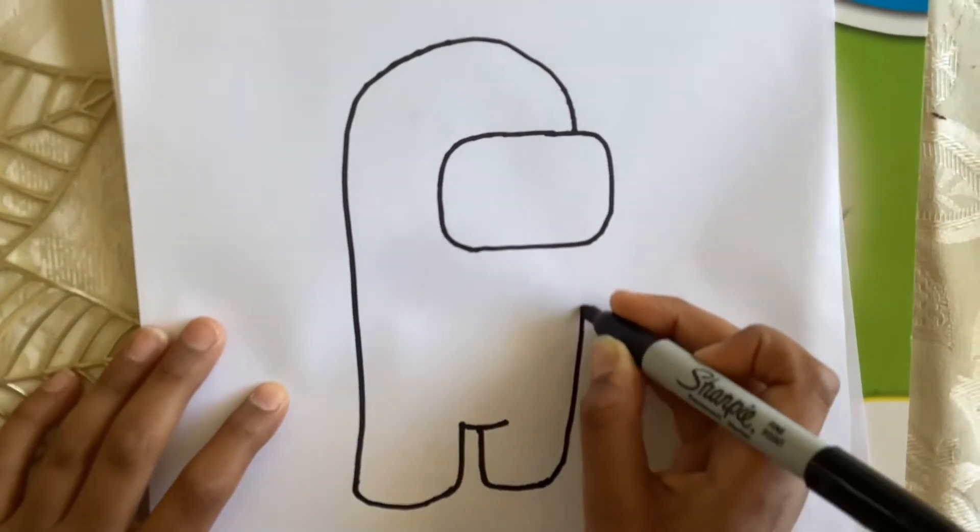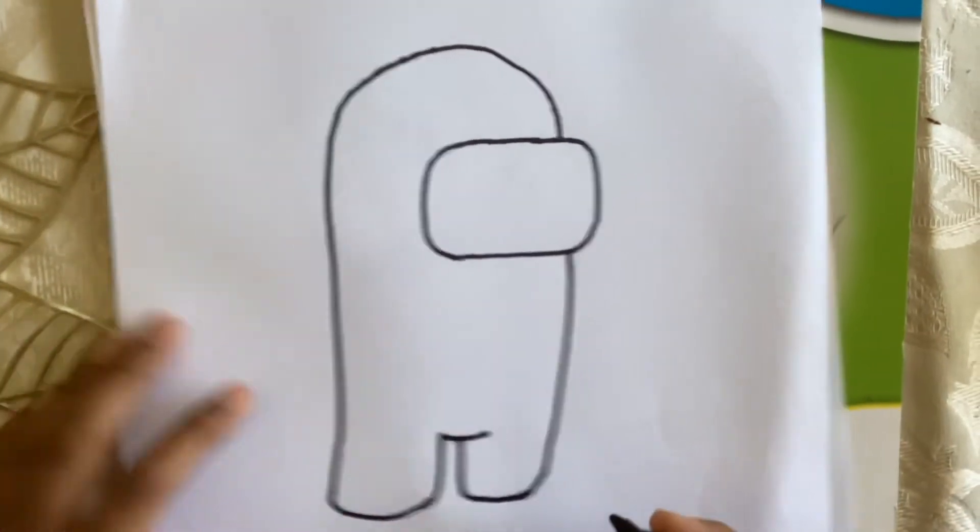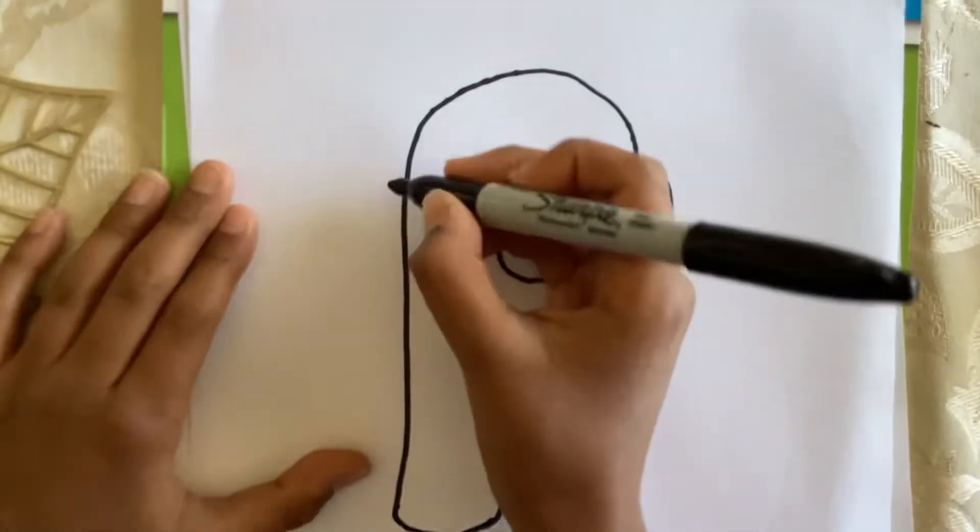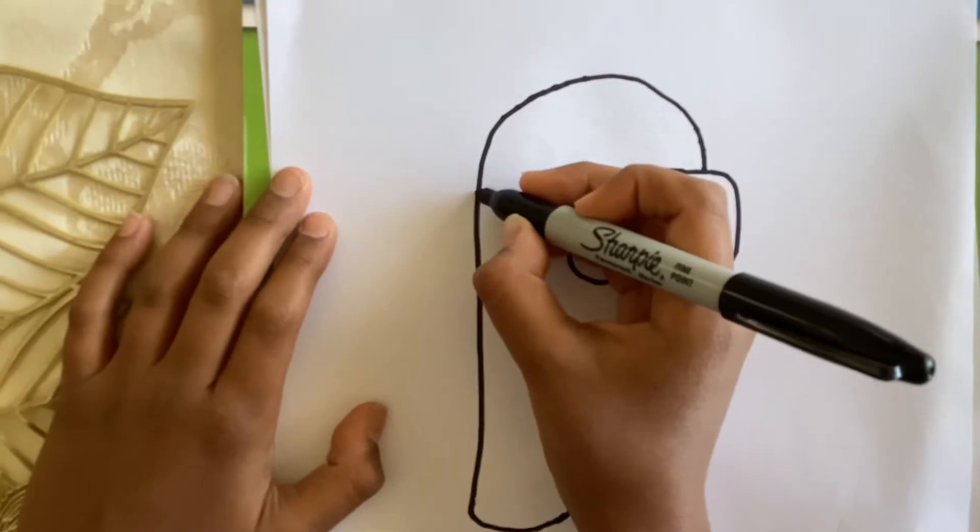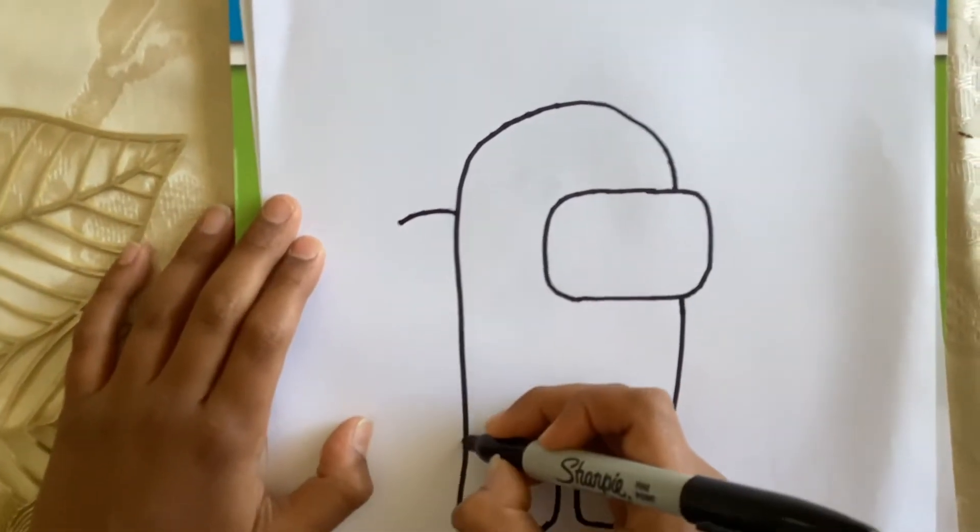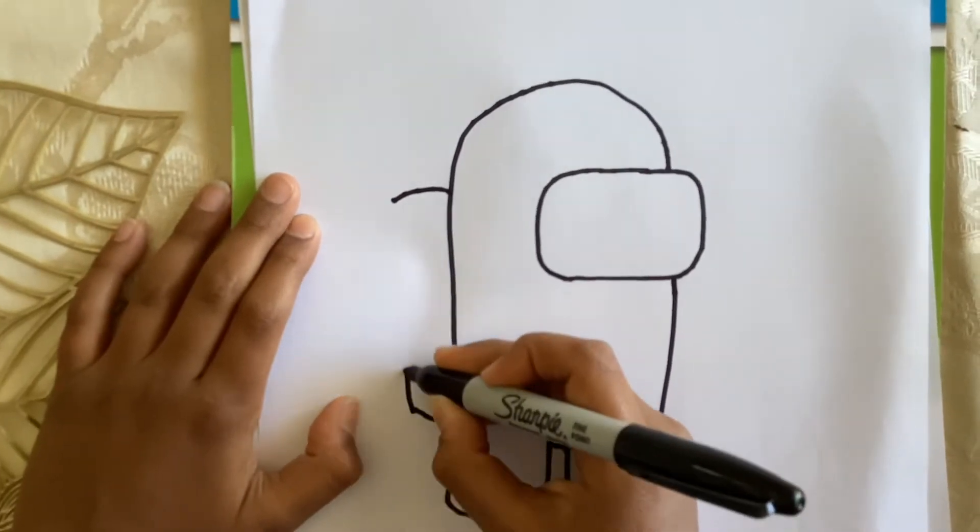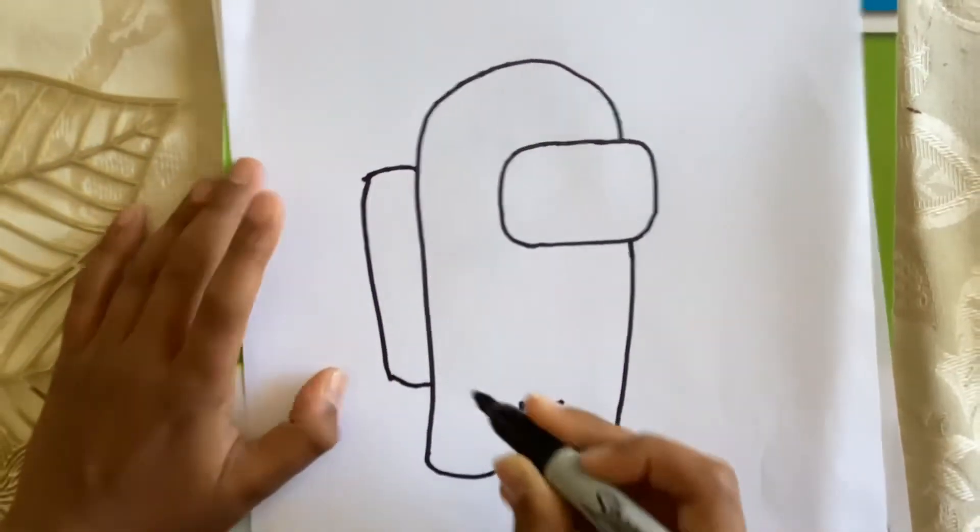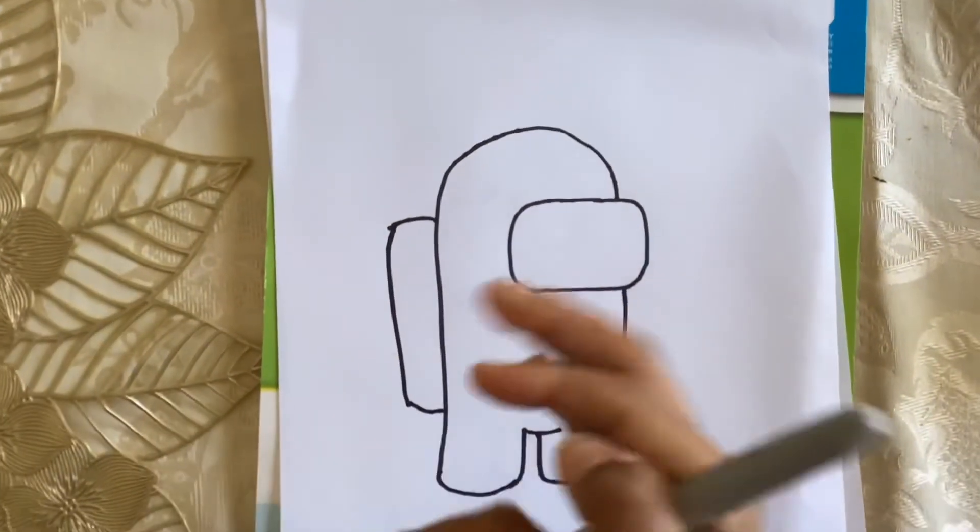Then curve all the way back up like that. Next we're going to draw the backpack - there's a curve out like that, then another curve like that, and you connect it with a slight curve like that. We're done, now I'm going to color it.